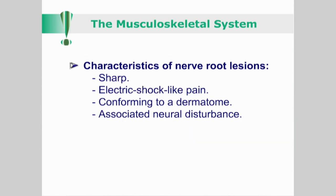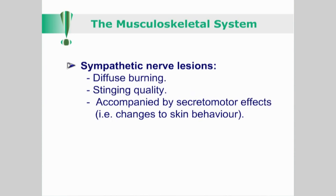Nerve root lesions will also generate sharp, electric shock-like pain, this time conforming to a dermatome with associated neural disturbance. Sympathetic nerve lesions can produce sensations of diffuse burning or stinging quality, often accompanied by secretomotor effects. It needs to be emphasized, however, that these are general guides, and in many instances the character of pain can vary significantly.